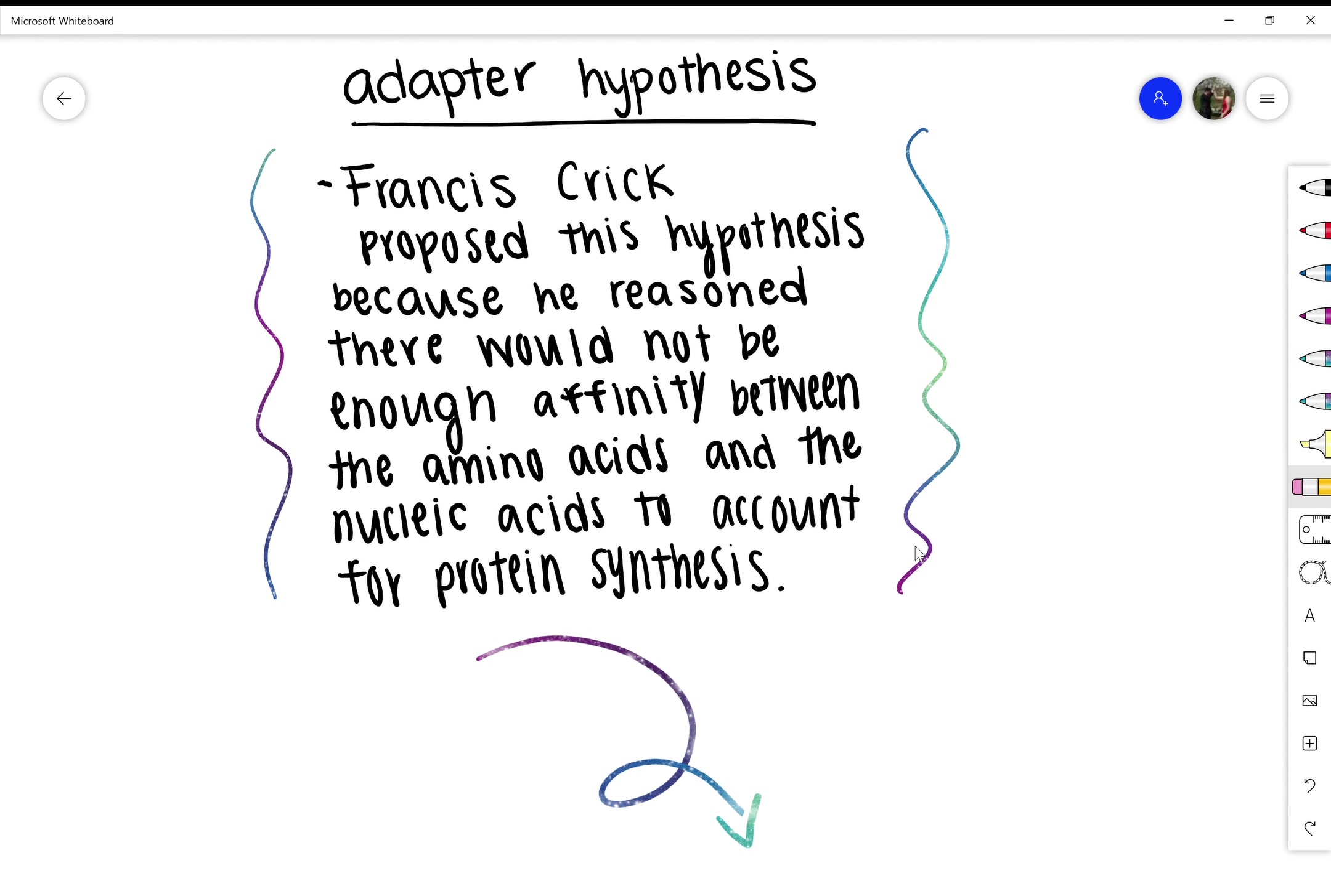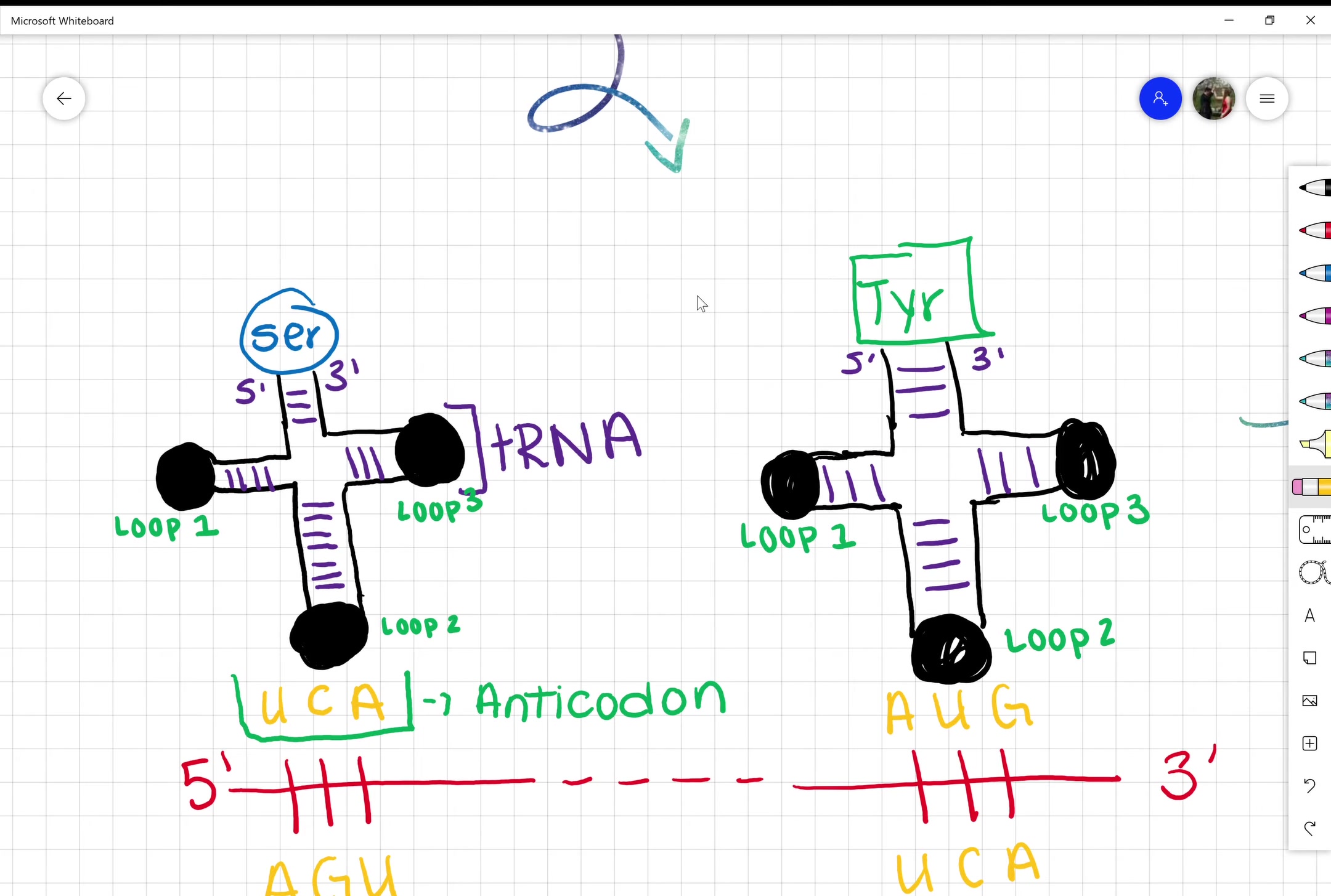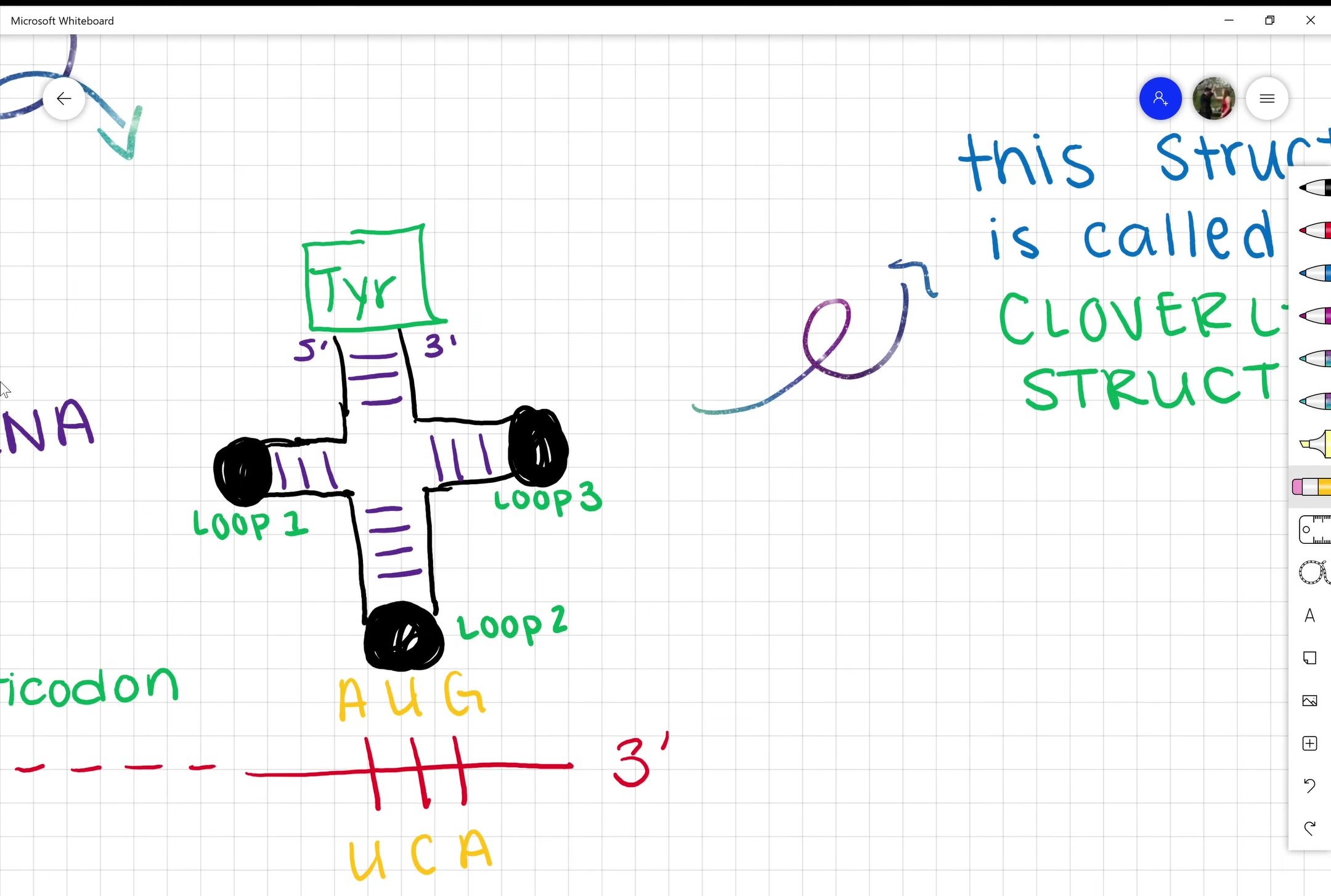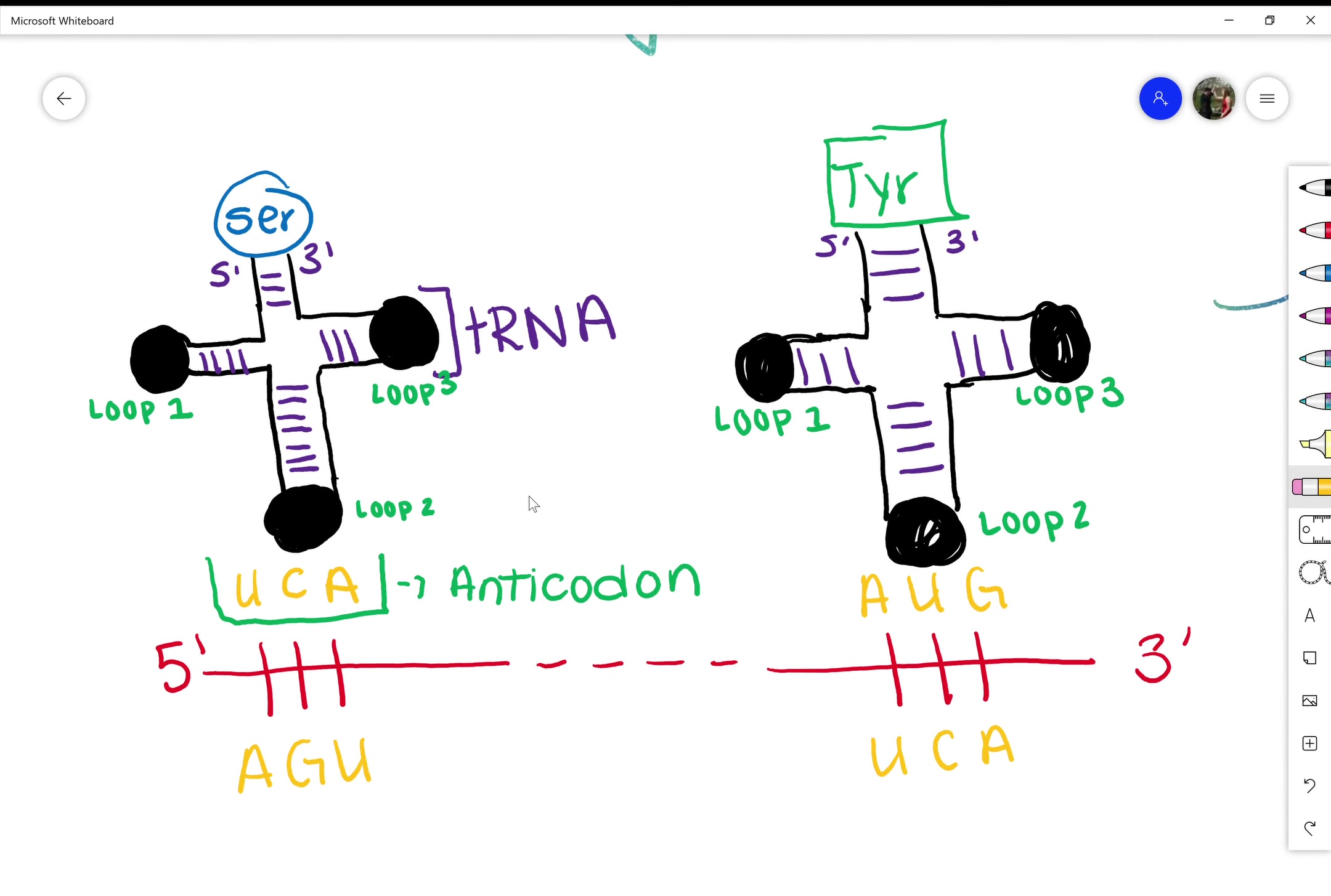Here we have a rough drawing of what is called a cloverleaf structure. This is due to having three loops in the structure. At the top of each structure, there's an amino acid. On the right side, we have amino acid tyrosine, and on the second structure, we have amino acid serine.